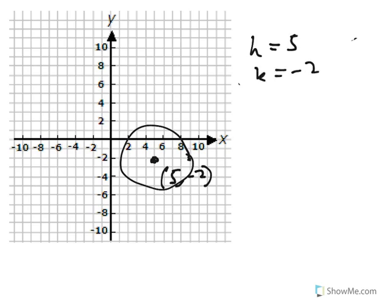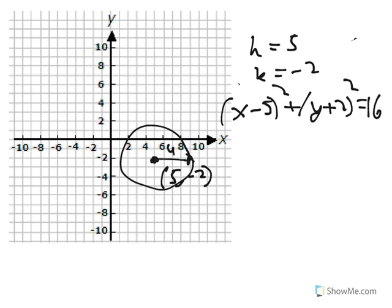So the equation of this circle is x minus 5 squared plus, now it's y minus negative, so I'll write y plus 2 squared. And the radius of this circle seems to be 4, just because we can count it over, so 16. And that's the equation of the circle.